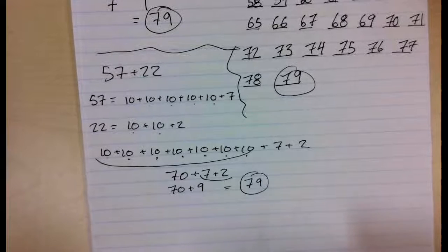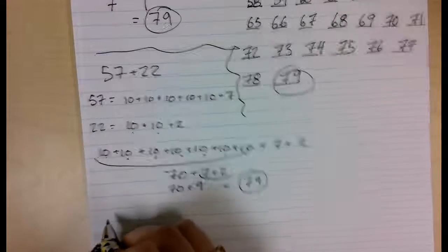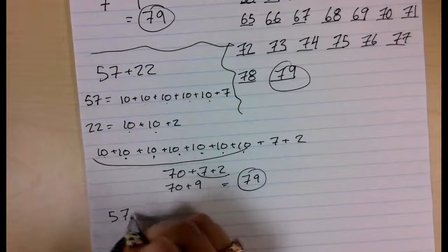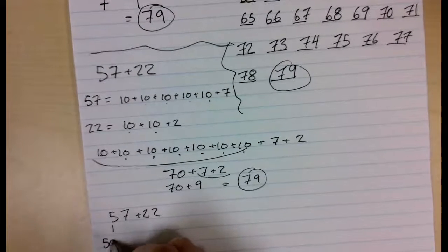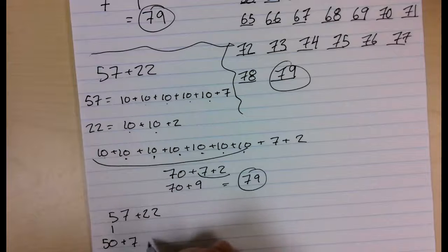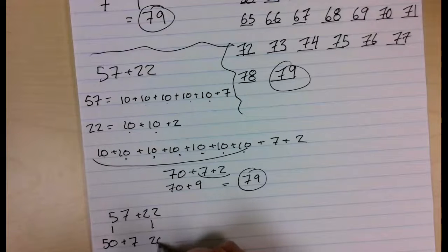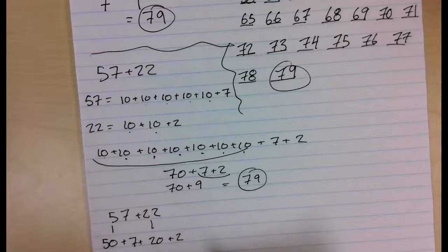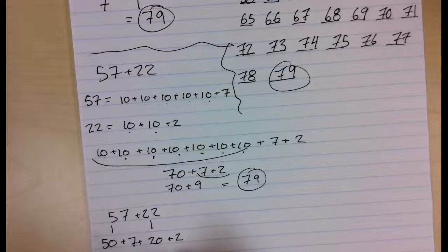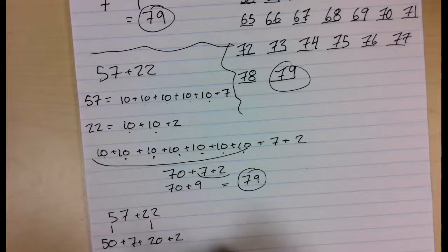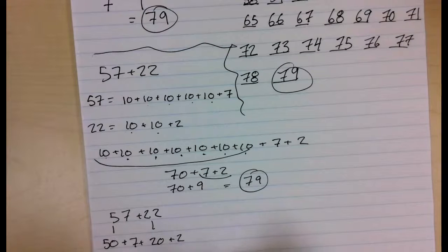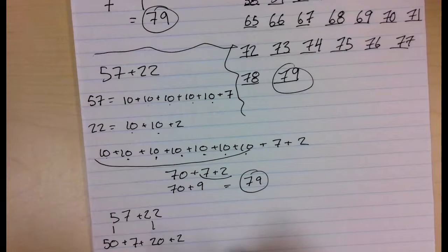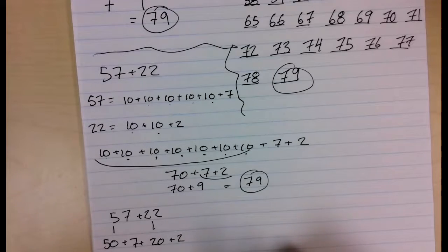Another way to do my friendly number with 57 plus 22 is I could break it down to 50 plus 7 and 20 plus 2. And then, 50 plus 20 is 70. 7 plus 2 is 9. And then, 70 plus 9 is 79.